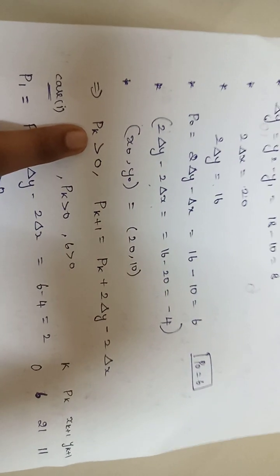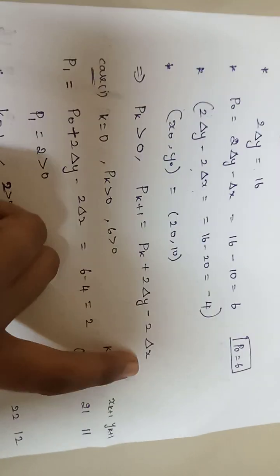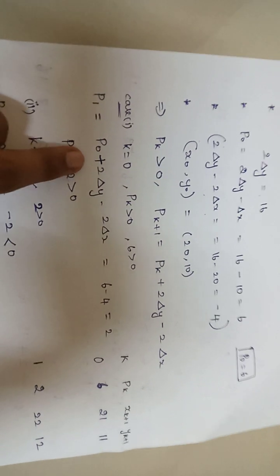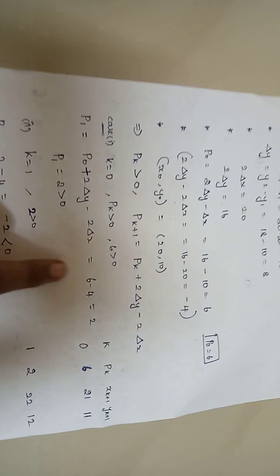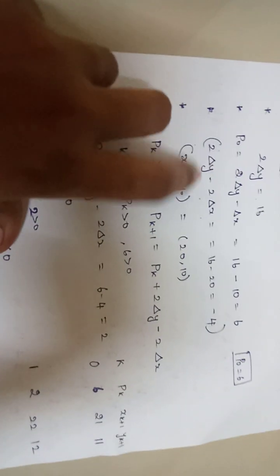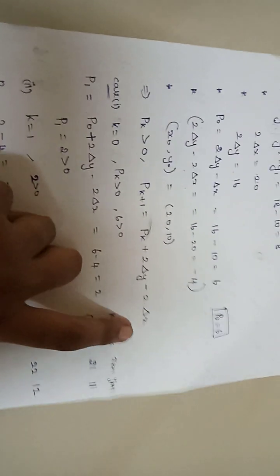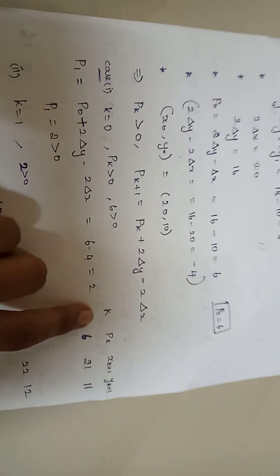Since P0 = 6, which is greater than 0, use the formula Pk+1 = Pk + 2Δy minus 2Δx. Here Pk = 6, and 2Δy minus 2Δx = minus 4, so 6 + (minus 4) = 2. Set up the table with columns k, Pk, xk+1, yk+1. Since P0 > 0, increase both x and y: the first plotted point after (20,10) is (21, 11).